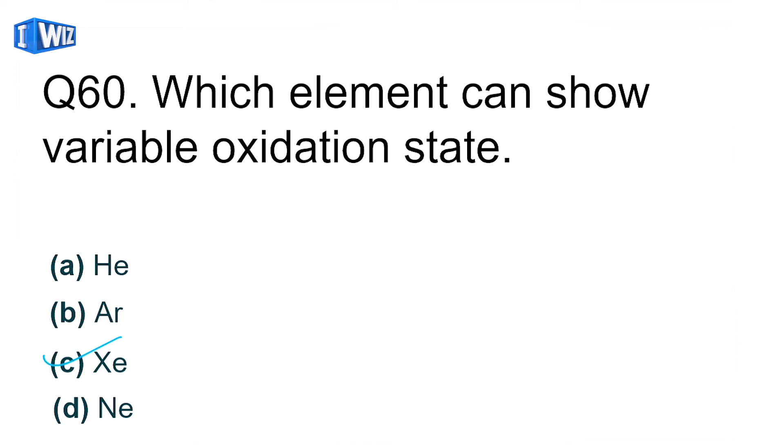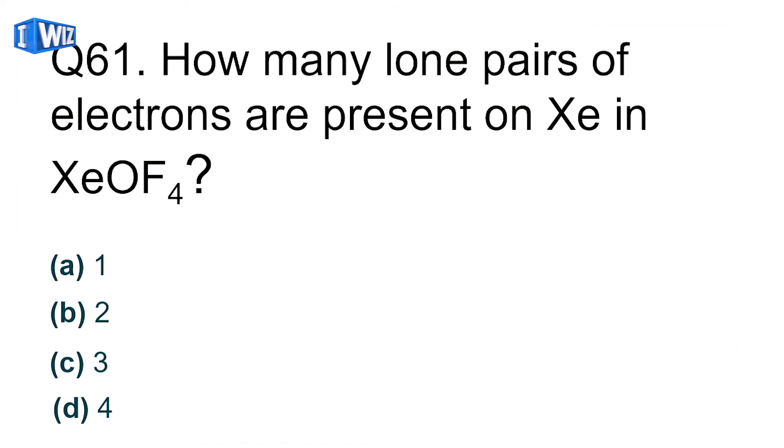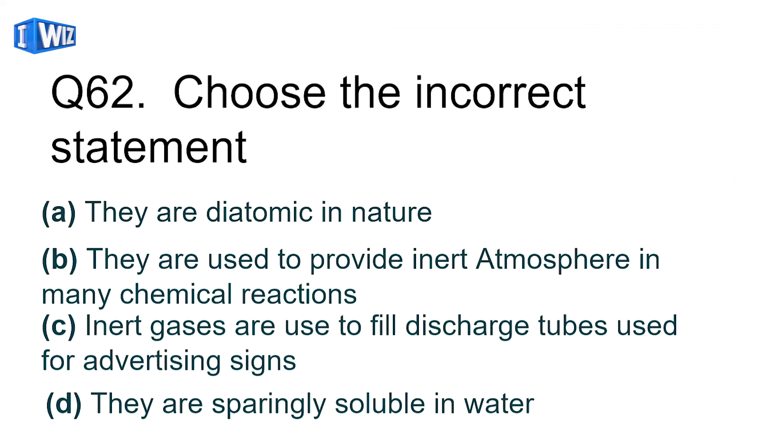How many lone pairs of electrons are present in XeOF4? In XeOF4, xenon has eight electrons total. Four fluorines are bonded on four sides, and oxygen is bonded, so only one lone pair remains. The rest of the electrons are involved in bond formation.